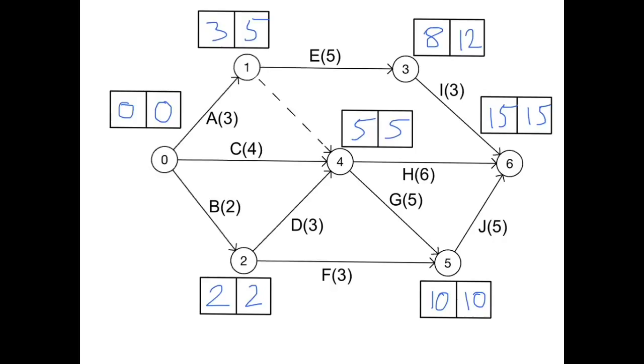Next we calculate the floats. So what we do for activity I is 15 minus 8 is 7, minus 3 is 4. So that has a float of 4. For J, we do 15 minus 10 is 5, minus 5 is 0. For H, 15 minus 5 is 10, minus 6 is 4. For G, we're doing 10 minus 5, minus 5 is 0. For F, we're doing 10 minus 2 is 8, minus 3 is 5.